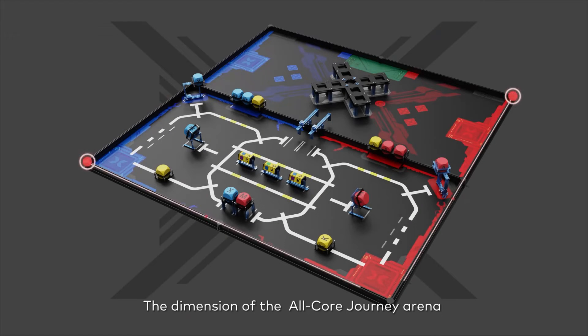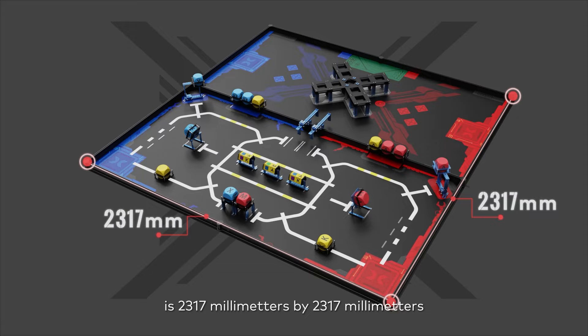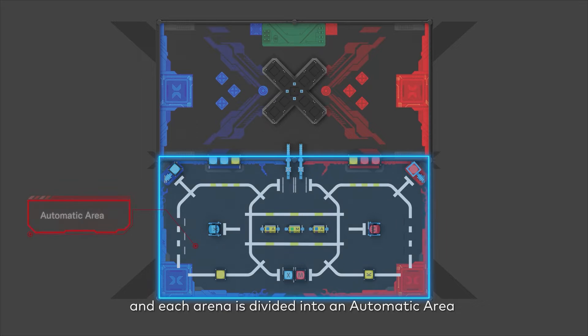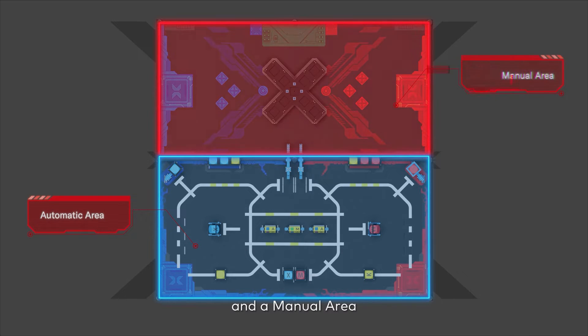The dimension of the All-Core Journey arena is 2317mm by 2317mm, and each arena is divided into an automatic area and a manual area.